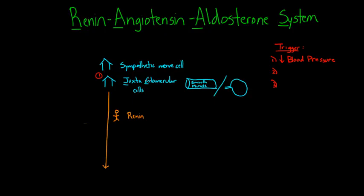For example, let's say you're running away from a bear, or you're trying to win a fight, or you're in a car accident and you're bleeding. Any sort of major stressor is going to cause these nerve cells to start firing. When they fire, that JG cell starts releasing renin. So the second trigger would be sympathetic nerves.